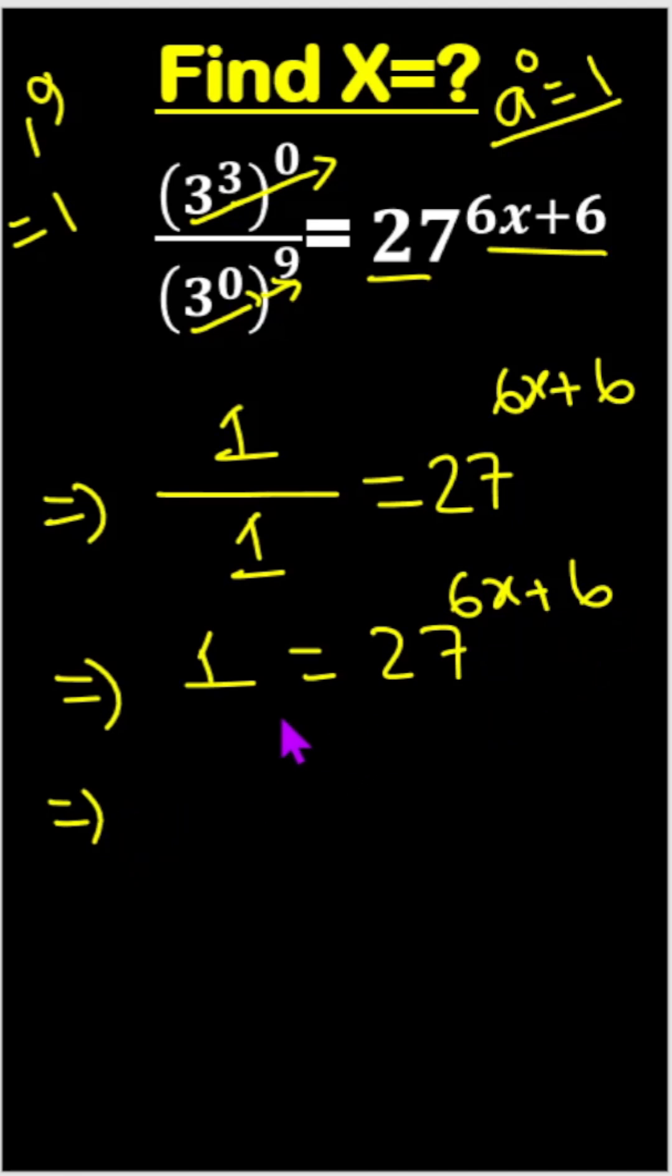So we have to make the same base. This means we can write 1 as 27^0, so 27^0 equals 27^(6x+6).